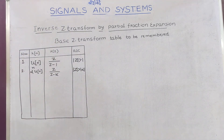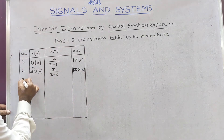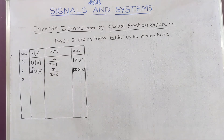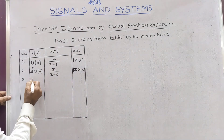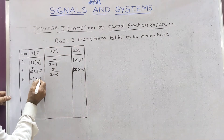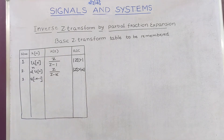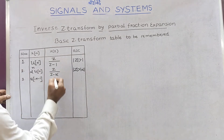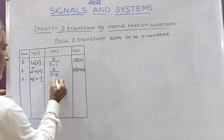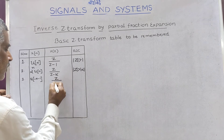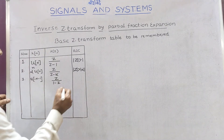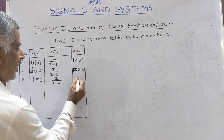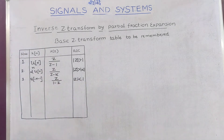The third one is what is known as the left-sided sequence, that is u[-n-1]. For that, the Z transform is Z over 1 minus Z, with ROC |Z| less than 1.